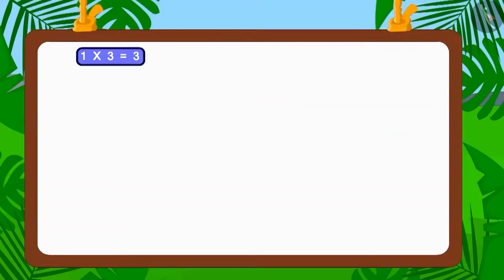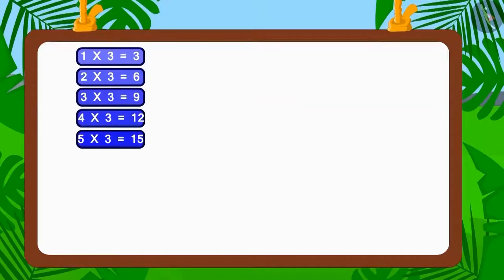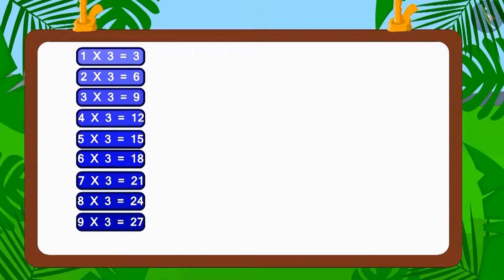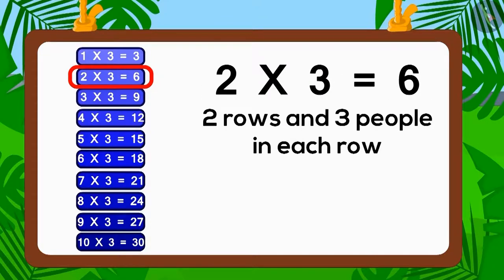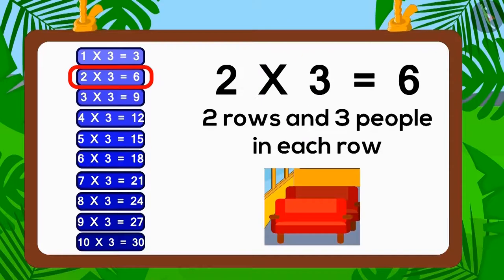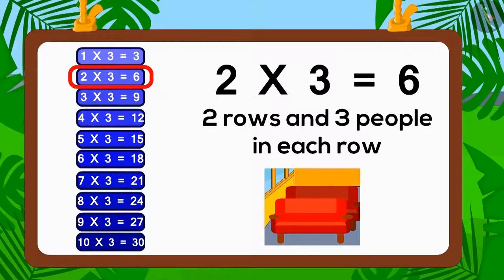Now, let's look at the table of three. Does the number six appear in the table of three? Two multiplied by three is six. Therefore, three is the factor of six. So, if three people sit in each of two rows, how many people in total would be sitting on the bus? Six.